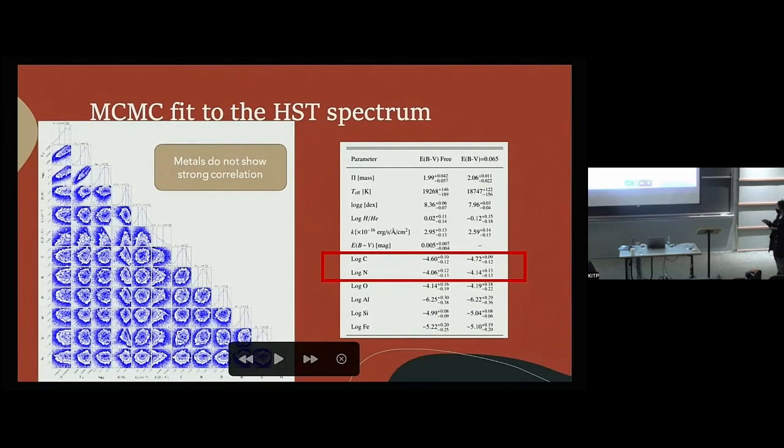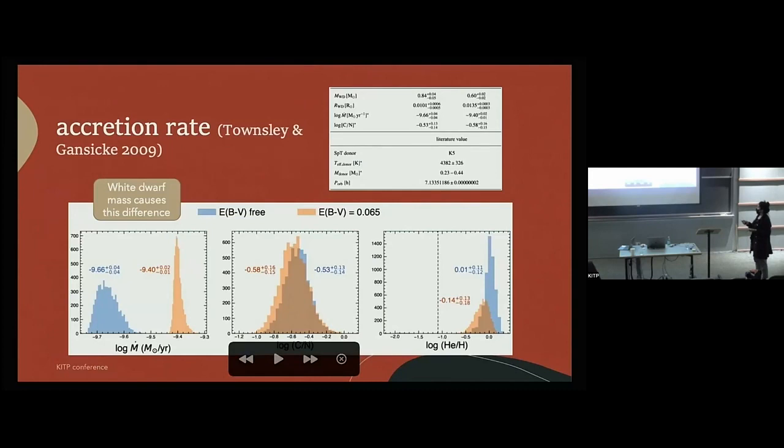These are the results of the fit. These are the values I get from these two abundances. Why these two abundances? Because using the carbon to nitrogen ratio I can constrain the evolution of these systems. Here I'm showing the sample: here I have carbon to nitrogen, this is helium to hydrogen abundance, and also the accretion rate. Knowing the surface gravity means you can know the mass of the white dwarf, and knowing the mass of the white dwarf you can use compressional heating to determine the accretion rate. Here you see two different samples and that is because of the reddening. The reddening has a huge effect on the mass of the white dwarf.